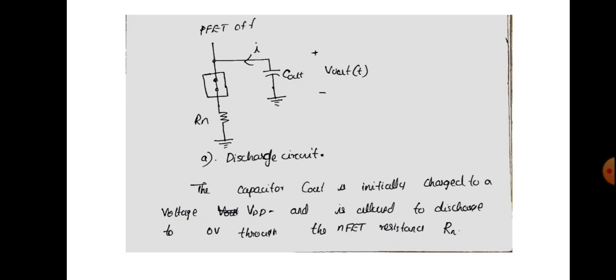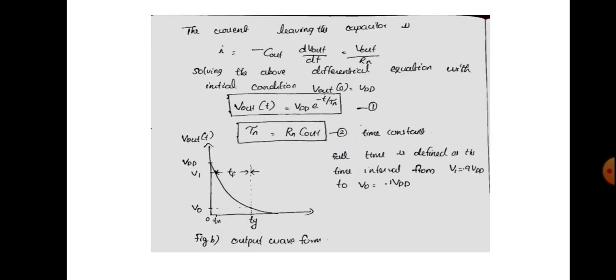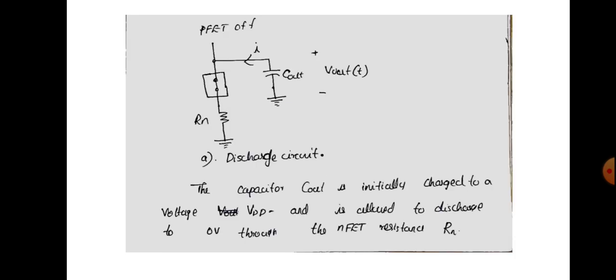What happens here is the capacitor Cout will discharge through the NFET. This corresponds to a discharging circuit — the capacitor is initially charged to VDD and discharges through resistance Rn to ground.